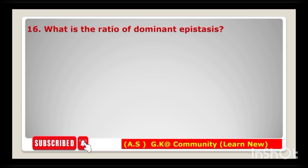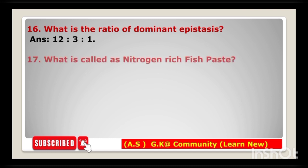Next question: what is the ratio of dominant epistasis? The ratio of dominant epistasis is 12:3:1. Next one: what is called nitrogen-rich fish paste? The answer is mam — mam is called nitrogen-rich fish paste.